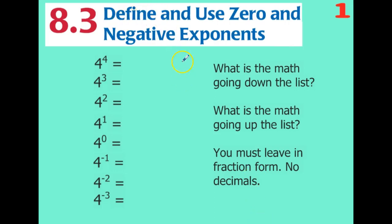Hello. Today we are defining and using zero exponents and negative exponents — exponents that are a negative number and exponents that are zero. We're going to start by doing the ones that we know. We know four to the power of one is just four one time, which is just four.